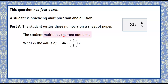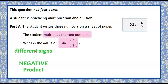Welcome back. So we're going to multiply the two numbers that are given: negative 35 multiplied by five-sevenths. I notice that I have two different sign values — a negative and a positive. Let's review the rules for multiplying. When you have different signs, your product is going to be negative. So let's set up our workspace and add our negative sign. Now I can multiply by ignoring the signs, since I've already determined the product will be negative.